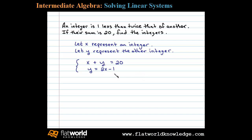Once we set it up, we can solve the system any way we choose. In this case, I'll choose the substitution method. We'll substitute the expression 2X minus 1 in for Y in the first equation, so we have X plus 2X minus 1 equals 20.